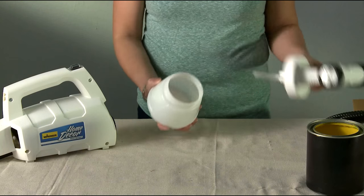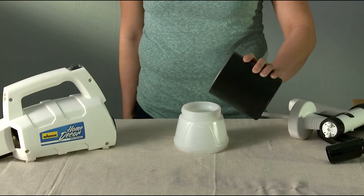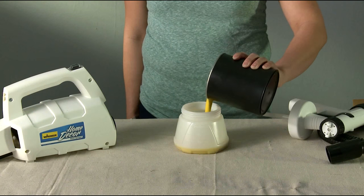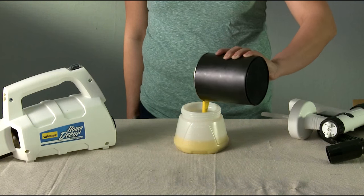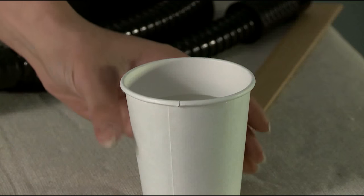To set up the spray gun, unscrew the container from the gun and pour the paint or stain into the container. Use the Fluid Ounce Guidelines as a reference for thinning. Try to fill with paint to one of the lines, then add water to the next fluid ounce measurement.